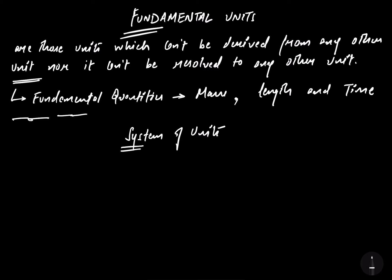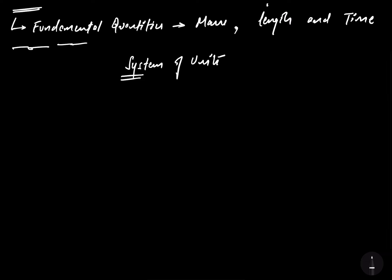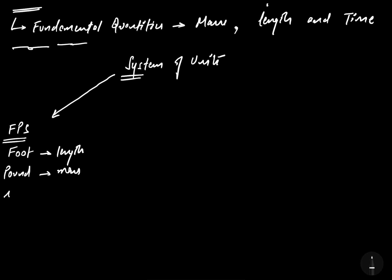There are four basic types of units. The first system is FPS. F stands for foot — that's the unit of length. P stands for pound — that's the unit of mass. And S stands for second — that's the unit of time. Unfortunately, this system is not followed now.